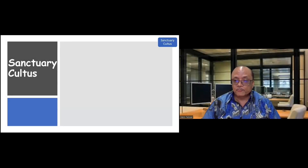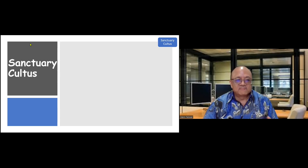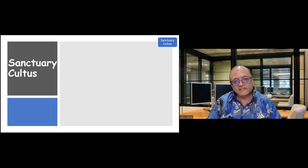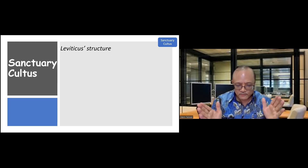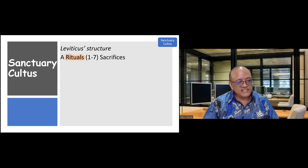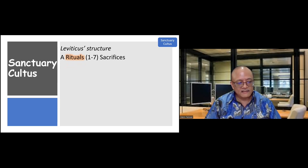There is one book in the Bible whose primary purpose is to inform us about the altars and rituals, and that is the book of Leviticus. To understand Leviticus, we need to understand its arrangement because it helps us focus on the materials in parallel lines. The first seven chapters deal with rituals about sacrifices — very specific, five sacrifices and the individual rituals for each one.